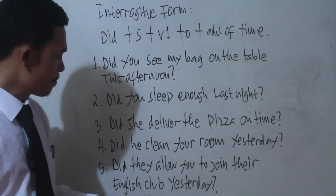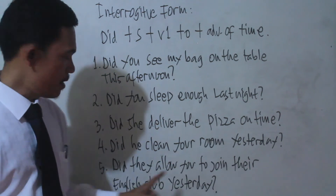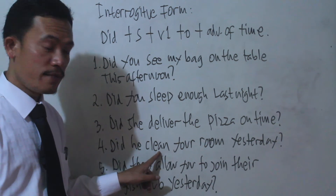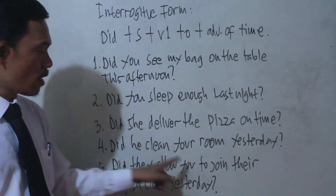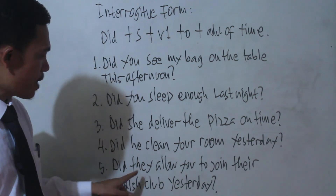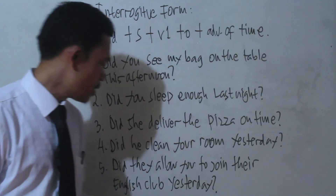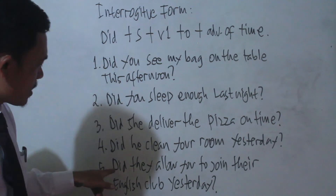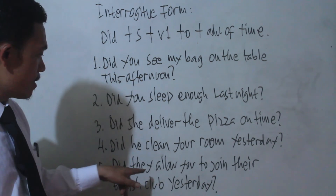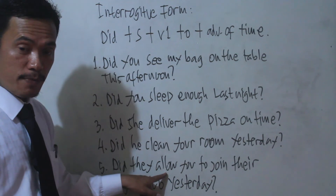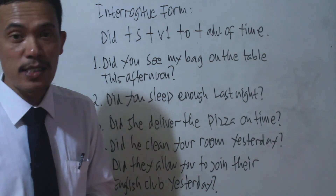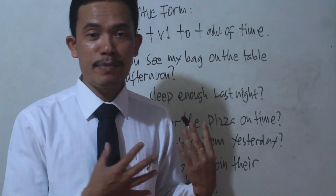Number four: 'Did he clean your room yesterday?' — Apakah dia membersihkan ruanganmu kemarin? 'Did' is in simple past tense, so 'clean' must return to infinitive. Number five: 'Did they allow you to join the English club yesterday?' — Apakah mereka mengizinkan anda untuk bergabung klub bahasa Inggris mereka kemarin? 'Did' is the helping verb for past-tense questions, and the main verb returns to verb 1.